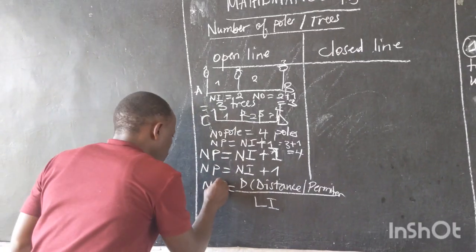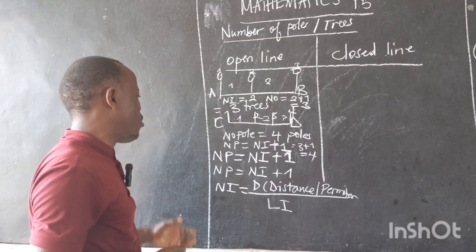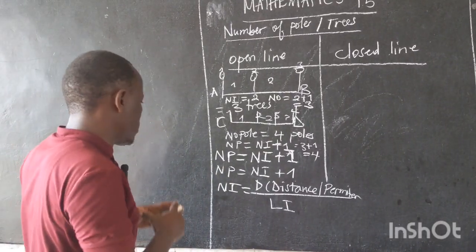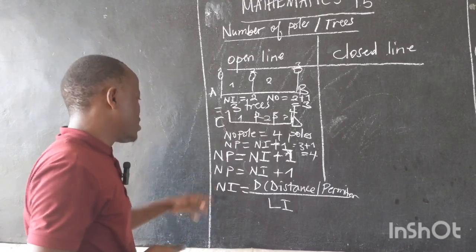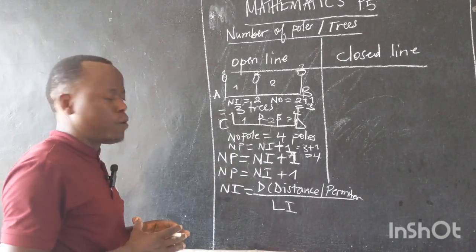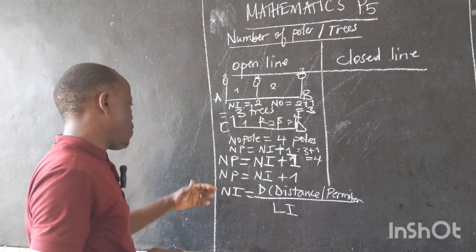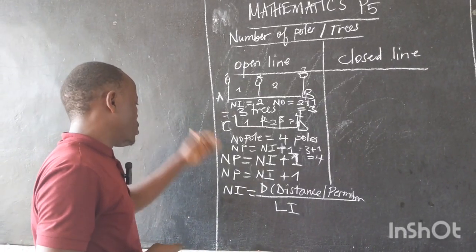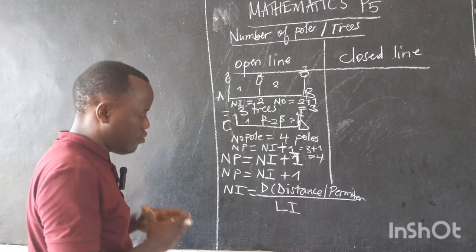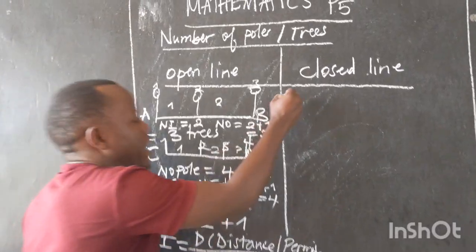Therefore, if they ask you to calculate or find the number of poles on an open line, you will first say that, since the number of objects is equal to the number of intervals plus one, you will also look for the number of intervals. And the number of intervals is equal to distance or perimeter over the length of interval.